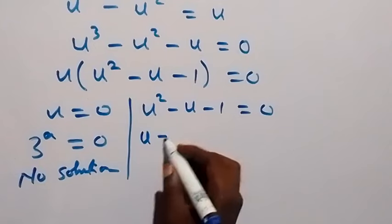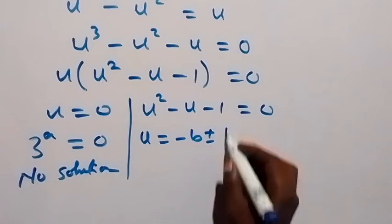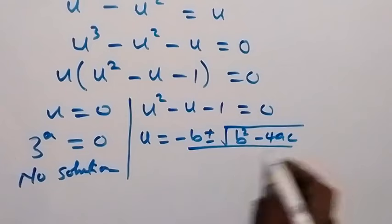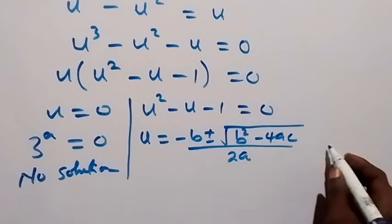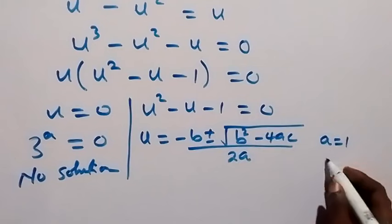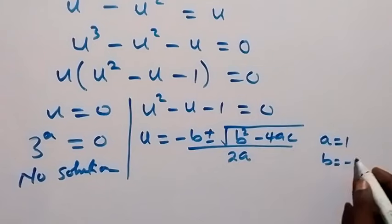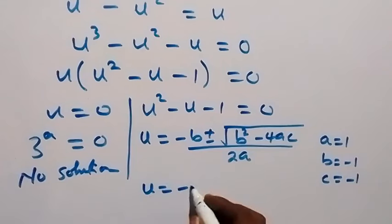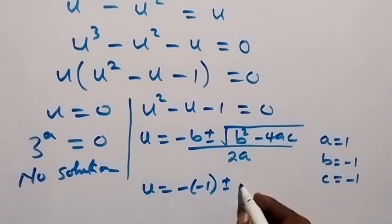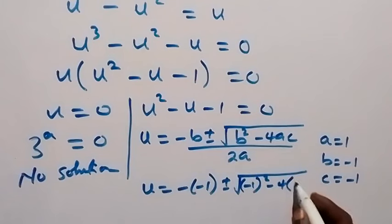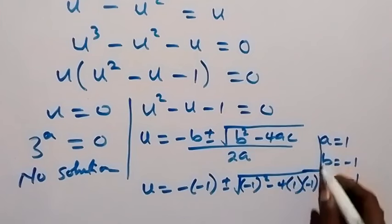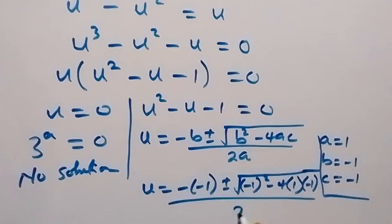For the second case, we solve u squared minus u minus 1 equals zero using the quadratic formula: u equals negative b plus or minus the square root of b squared minus 4ac, all over 2a. Here a is the coefficient of u squared, which is 1; b is negative 1; and c is the constant, negative 1.